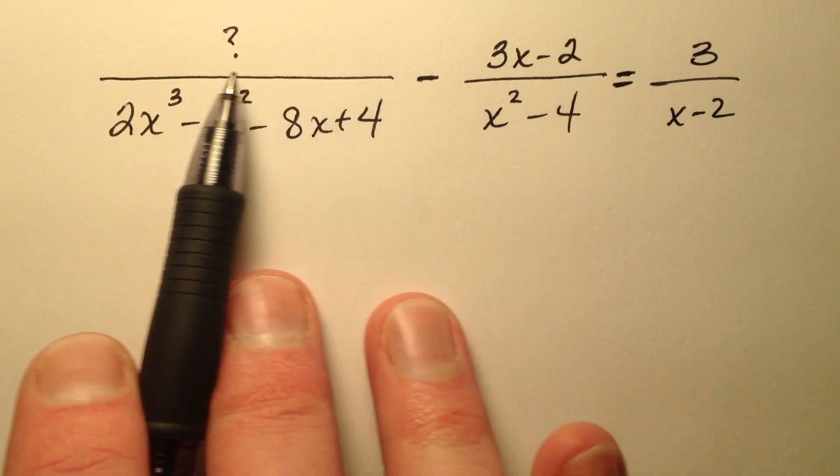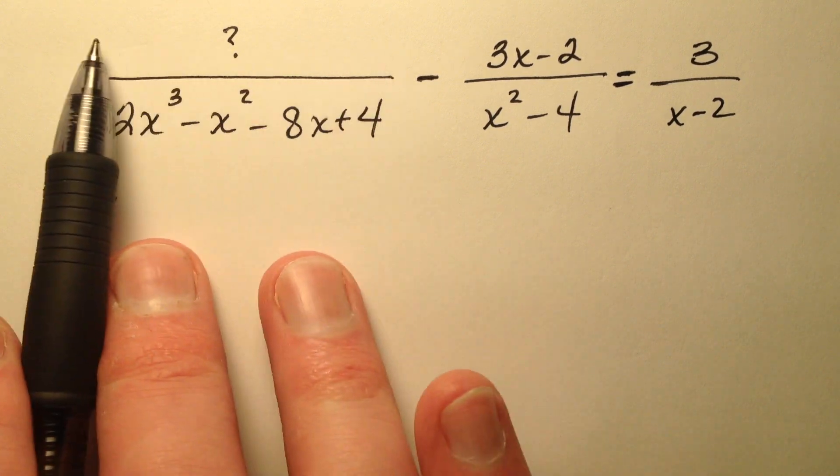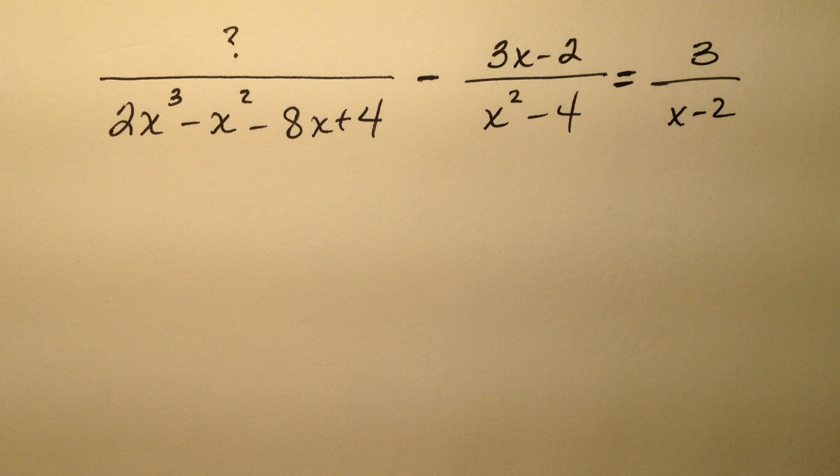But I don't know what this numerator is, so I would like to determine what polynomial belongs in this numerator. In order to do that, we need to first factor all the denominators and work the process we do whenever we are subtracting rational expressions.